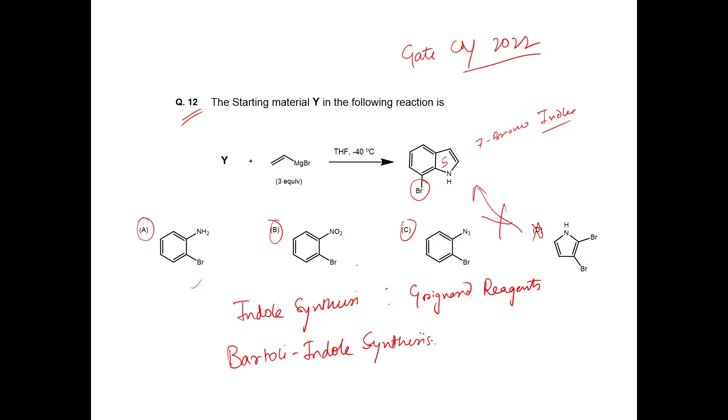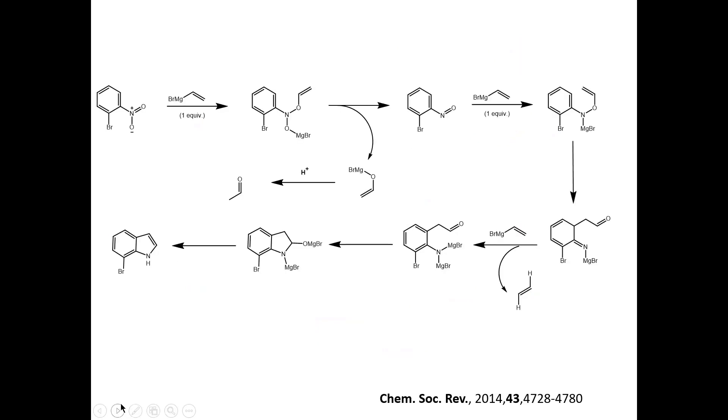Bartoli indole synthesis. What happens in Bartoli indole synthesis? 2-bromo nitrobenzene is the starting material or precursor. Then they react with one equivalent of vinylmagnesium. The total equivalent given to the reaction medium is 3 equivalent of vinylmagnesium bromide. From that, one equivalent reacts with nitrobenzene to form this moiety. Now this N-O bond is not stable, it opens up.